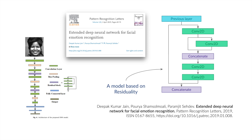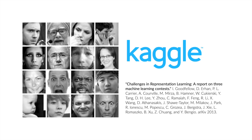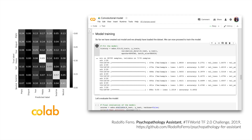This model makes use of residuality, which preserves the data information through convolutional layers. The dataset used to train the model is the public dataset from FER, published in the Challenges in Representation Learning — a report on three machine learning contests. The model was trained using GPUs on Google Colab, and it performed well on classification tasks for the emotions.